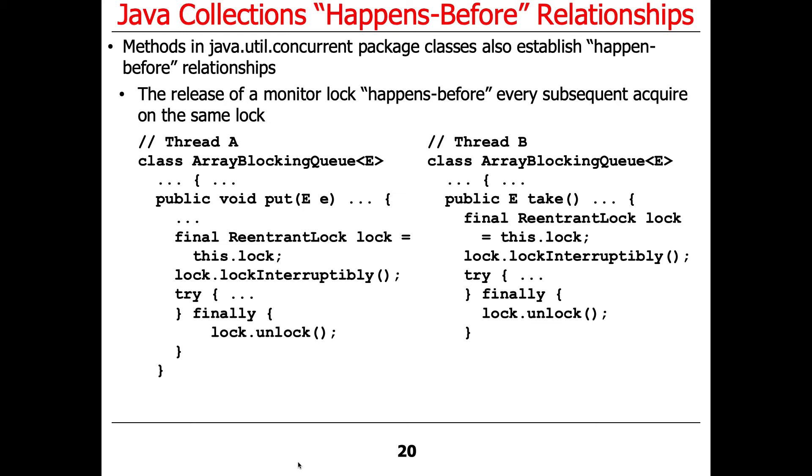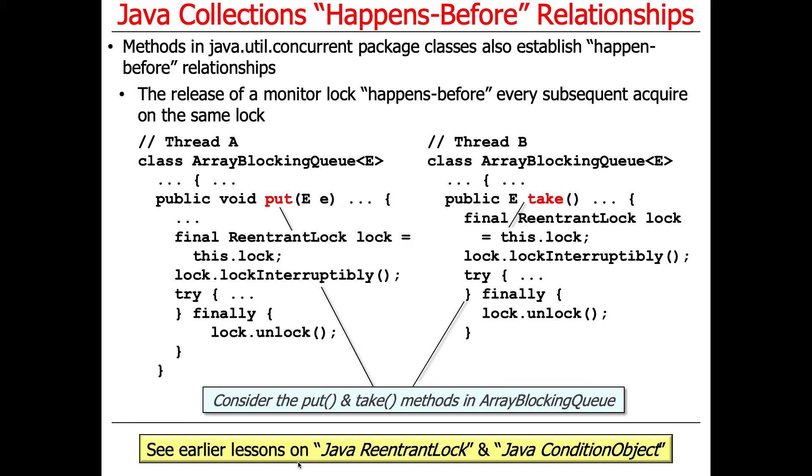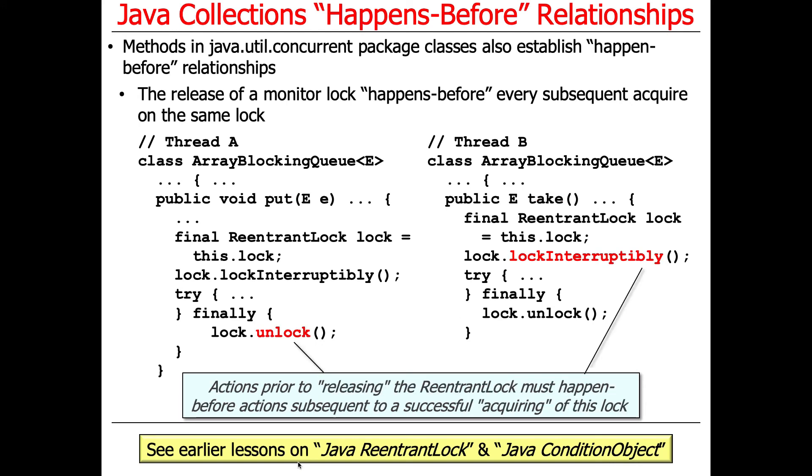We're going to have ArrayBlockingQueue. Here's thread A, it's going to do a put. Here's thread B, it's going to do a take. Let's take a look at these two things. We've seen this before.